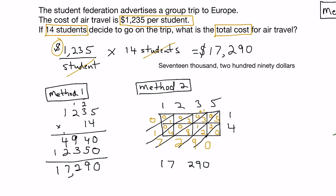And the last thing we can do is give the answer in numerical form and also in words how we write this number out. So it is $17,290. And there we go. The total cost for air travel is $17,290.